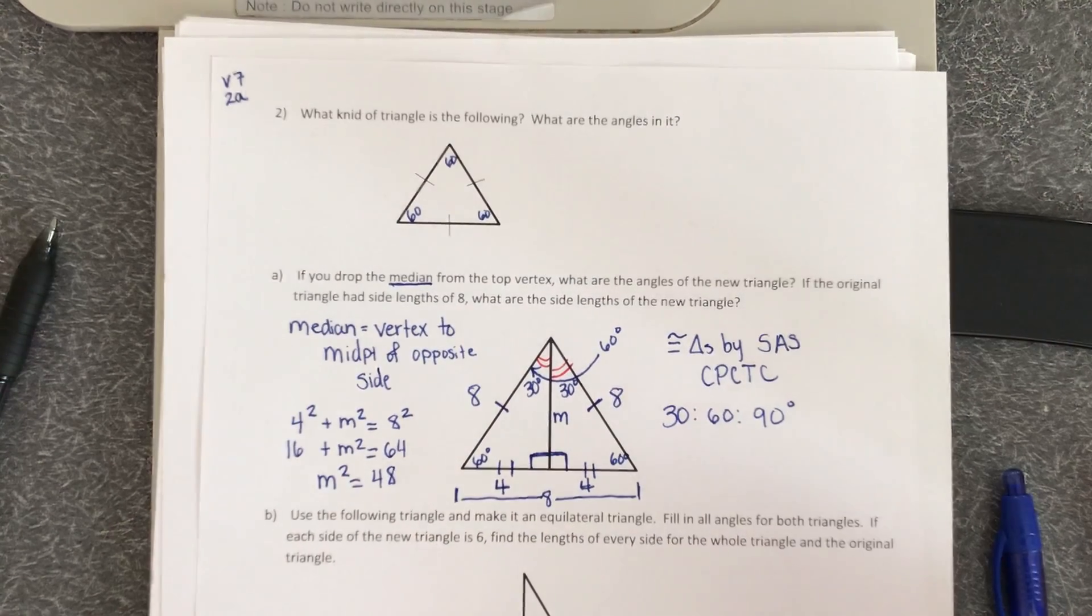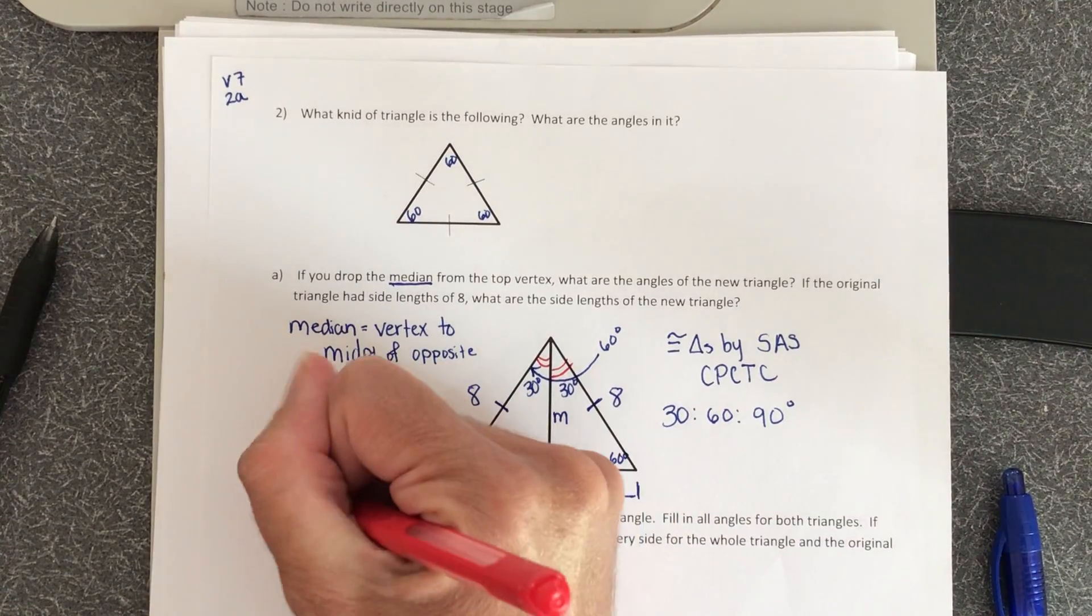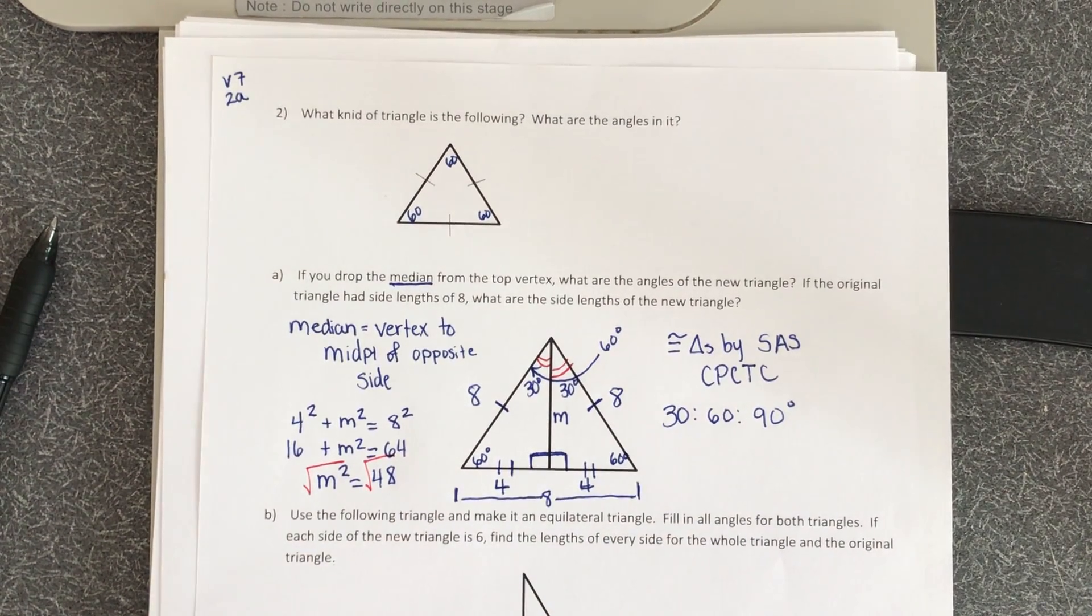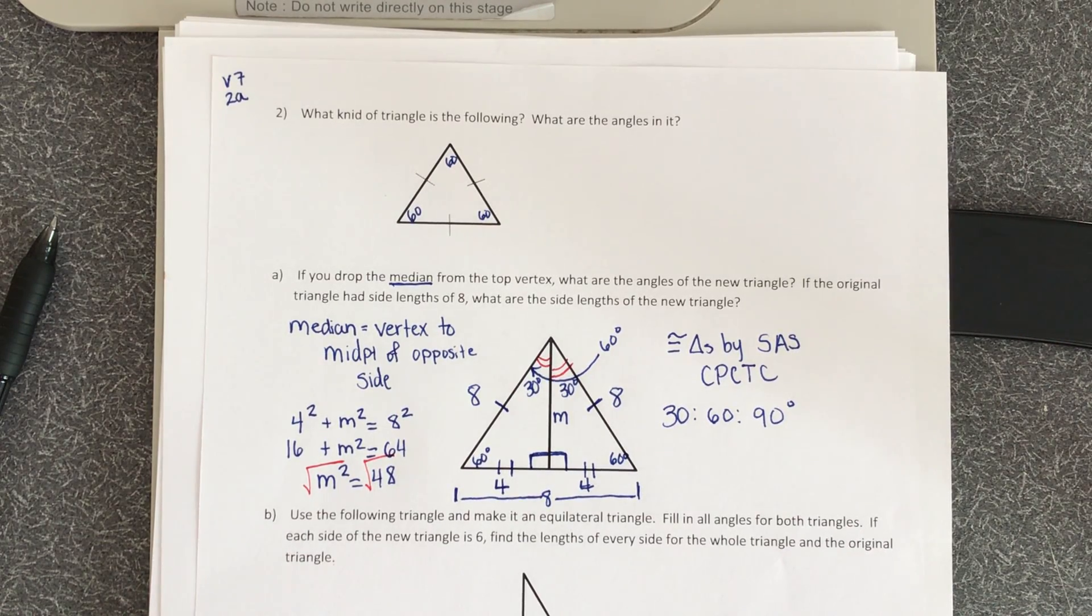How do we undo a square? We square root it. And so when I square root 48, we've got to break it down. So how does 48 break down?